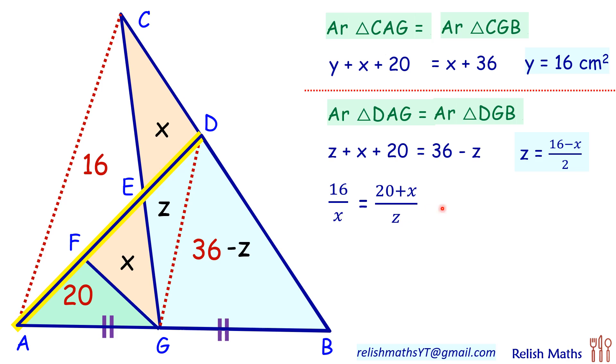Let's cross multiply it. We will get 16 times Z is 20X plus X square, and of course we will put the value of Z from here in this equation. So this 2 and this 16 will get cancelled. It will give me 8 times 16 minus X equals 20X plus X square. Let's take all the terms on one side and simplify it. We will get a quadratic equation X² plus 28X minus 128 equals 0.